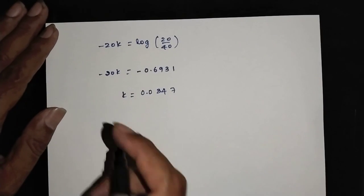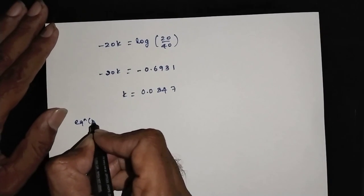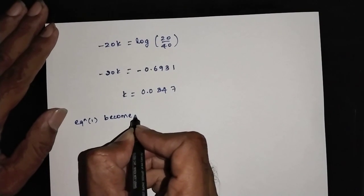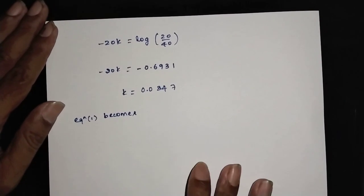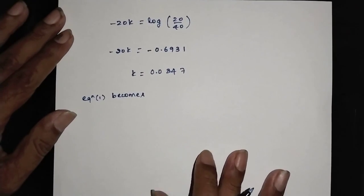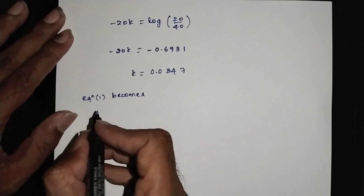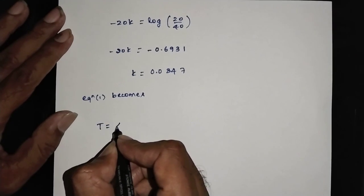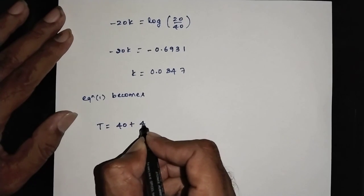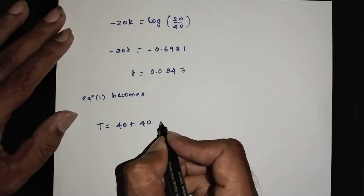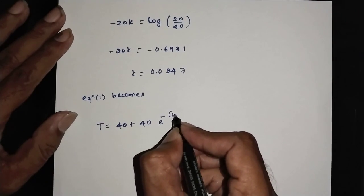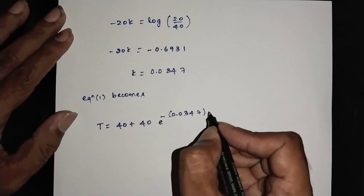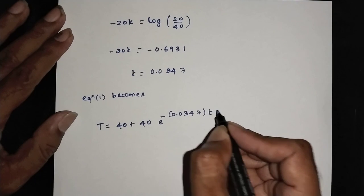Equation 1 becomes: T = 40 + 40 * e^(-0.0347 * t).